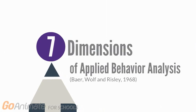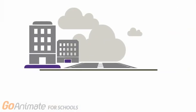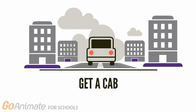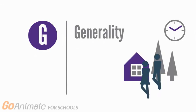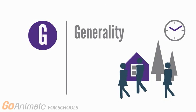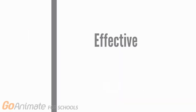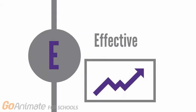The seven dimensions of applied behavior analysis — just remember to GET A CAB. Generality: acquired skills and responses should maintain over time, across different environments, in the presence of new people, or spread to new related behaviors. Effective: behavior change should be socially significant, and application of behavioral techniques should produce large enough effects to be noticed by a casual observer.